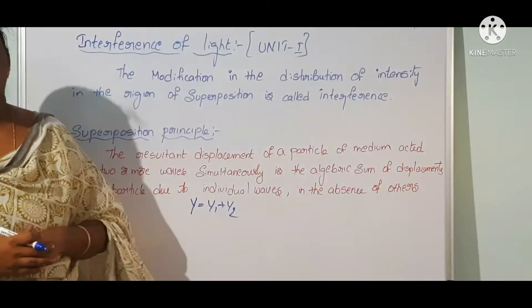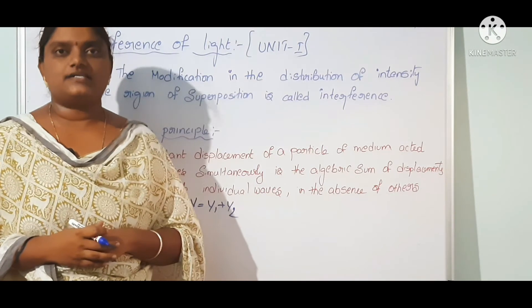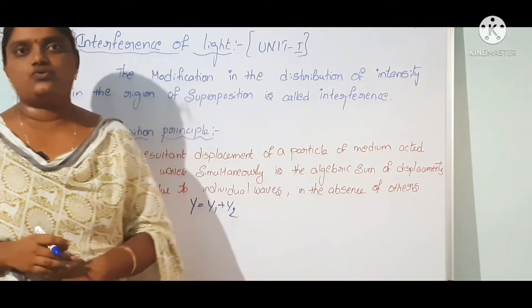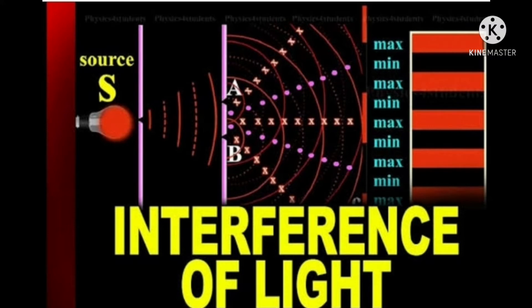Interference is of two types: constructive interference and destructive interference. To observe interference of light, a single-wavelength source is used. The light is split through two pinholes and propagated, causing two waves to be superimposed. This produces alternating bright and dark fringes due to constructive and destructive interference.